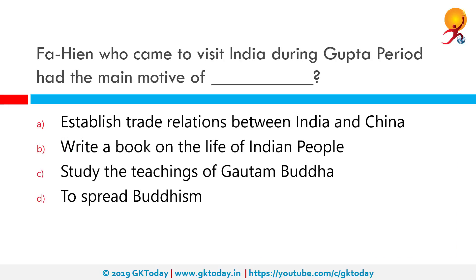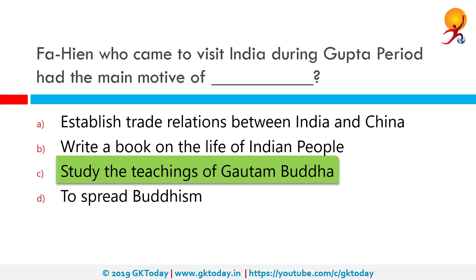Fa-Hien, who came to India during the Gupta period, had the main motive of what? The correct answer is the study of the teachings of Buddha. Fa-Hien was a Chinese Buddhist monk and translator who traveled by foot from ancient China to ancient India, visiting many sacred Buddhist sites in Central Asia, the Indian subcontinent, and Southeast Asia between 399 and 412 CE to acquire Buddhist texts.